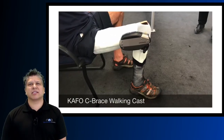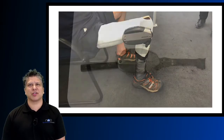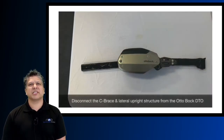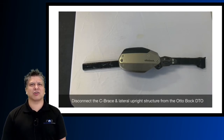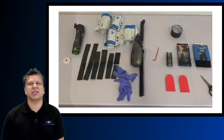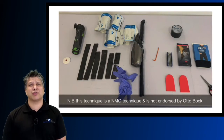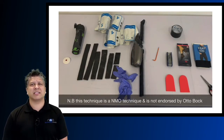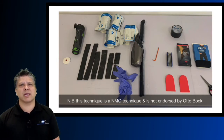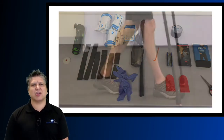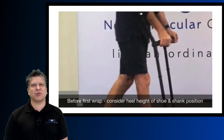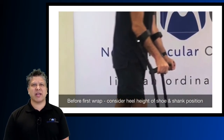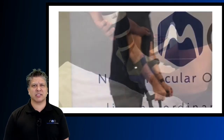For the C-Brace KFO walking cast on Jonathan, the first step is to disconnect the C-Brace and lateral upright from the Ottobock Diagnostic Test Orthosis. Please note this technique is not endorsed by Ottobock and is a neuromuscular orthotic technique. Before starting the walking cast you must consider the heel height of the client's shoe and what shank angle you're casting them in to generate a knee extension moment in the C-Brace in late stance.